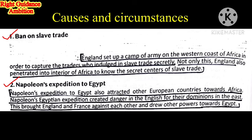Second point: Napoleon's Expedition to Egypt. Napoleon's expedition to Egypt attracted other European countries toward Africa. Napoleon wanted to become powerful not just in Europe but also on the African continent. His Egyptian expedition created danger for England's dominance in the East. This brought England and France against each other and drew other powers towards Egypt — both became enemy countries and tried to advance on the African continent.